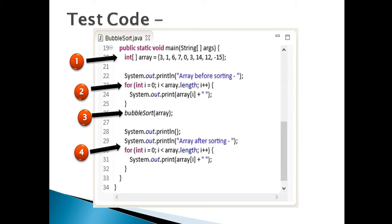Let's test the bubble sort algorithm. Step 1: create a main method to test the bubble sort algorithm. Step 2: create an unsorted array having a few elements as shown in the code above. Step 3: print the unsorted array on the Java console with the help of a for loop. Step 4: pass the unsorted array to the bubble sort method to sort the array in ascending order. Step 5: after bubble sort method execution, print the sorted array on the Java console with the help of a for loop.